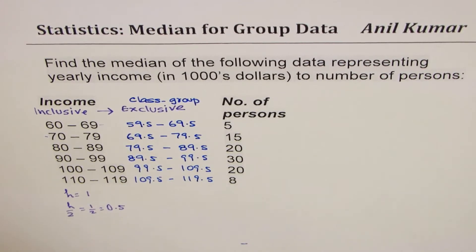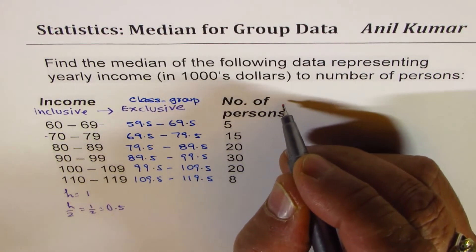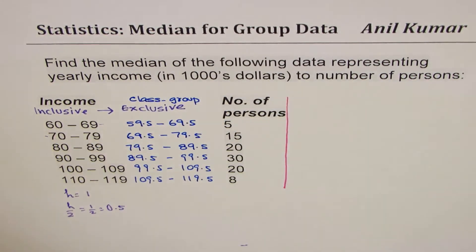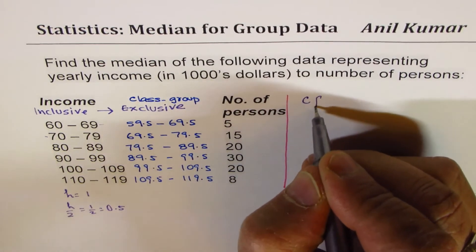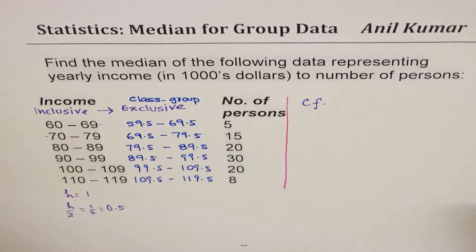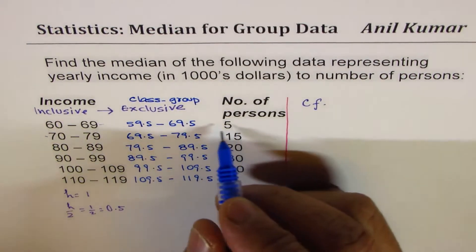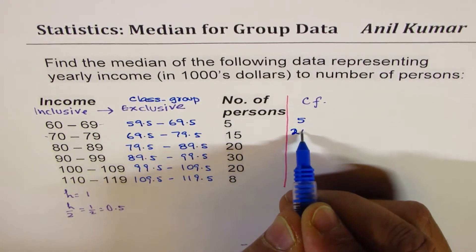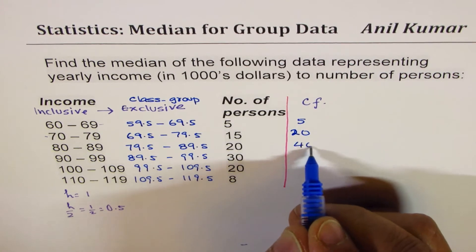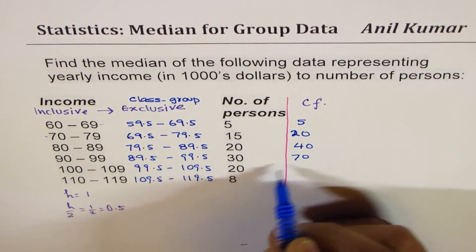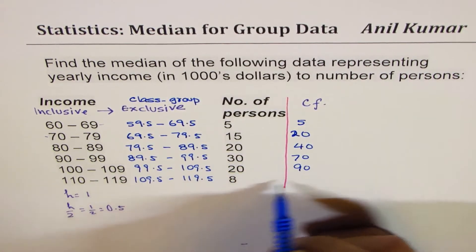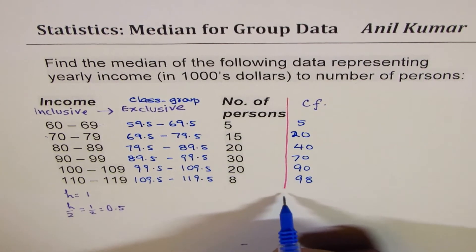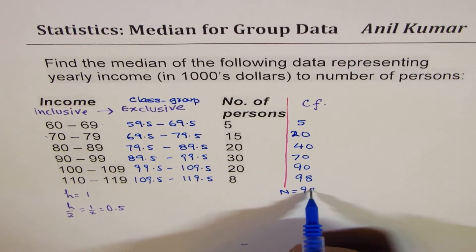To find median, we have to have cumulative frequency column. For the first one it is 5. Add 15, we get 20. 20 plus 20 is 40. 40 plus 30 is 70. 70 plus 20 is 90. 90 plus 8 is 98. So we know n is equal to 98.